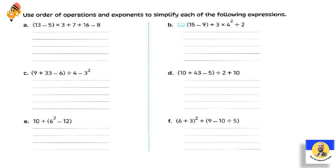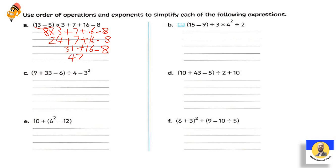Letter A — Order of operations: أول حاجة نعمل الـBracket: 13 - 5 = 8. بعدين 8 × 3 = 24. يبقى 24 + 7 + 16 - 8. نعمل الـPlus والـMinus من اليسار: 24+7=31، 31+16=47، 47-8 = 39. Final answer = 39.